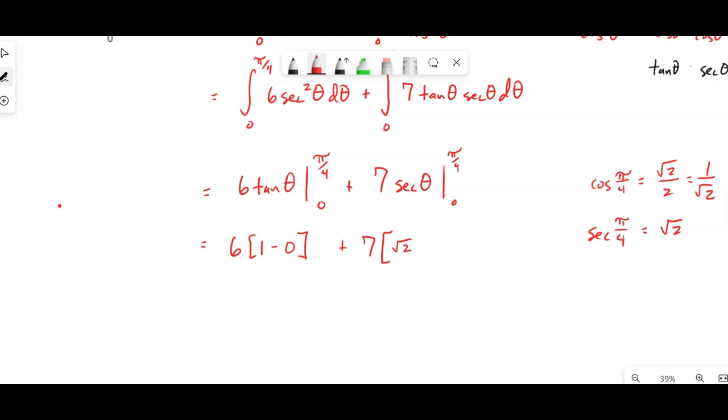But then the secant of zero is not zero, the secant of zero is one, because again it's reciprocal of cosine of zero, and the cosine of zero is one, so we're subtracting one on that second part.